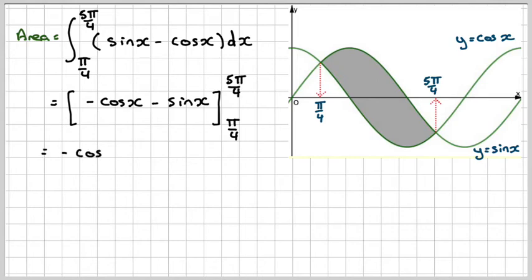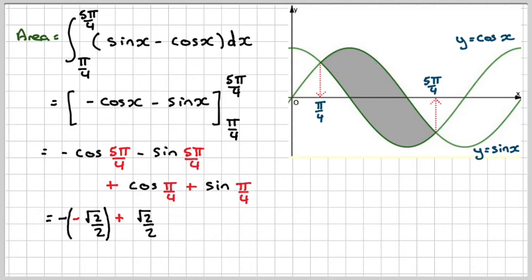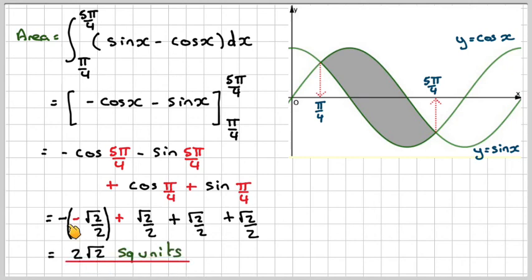Putting in the limits: we get minus cos(5π/4) minus sin(5π/4), plus cos(π/4) plus sin(π/4) — it's plus because we have a minus-minus here, and minus times another minus gives sin(π/4). Now cos(5π/4) is minus √2/2; we've got a minus sign in front, and sin(5π/4) is also minus, so that becomes plus √2/2. All four terms are √2/2, giving four lots of √2/2, which equals 2√2 square units.